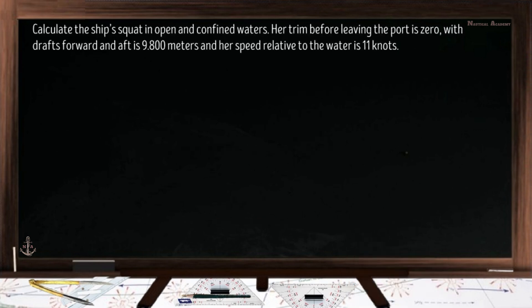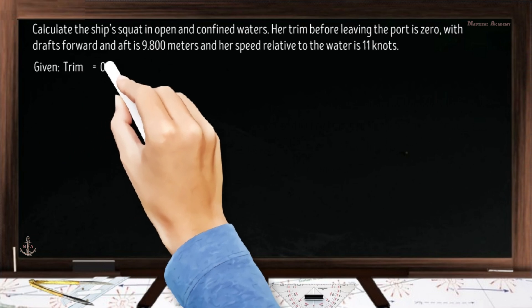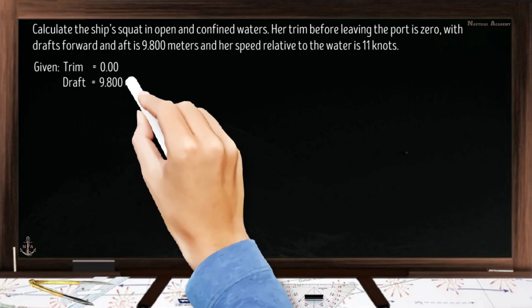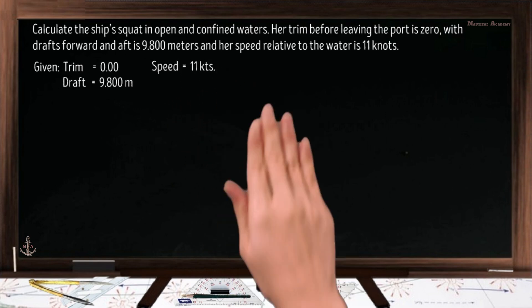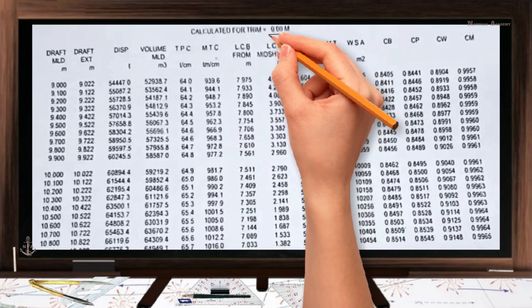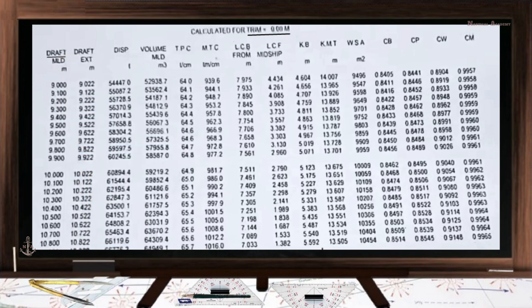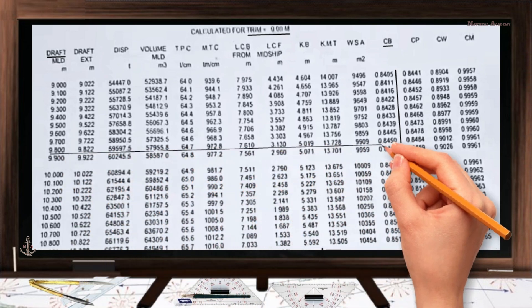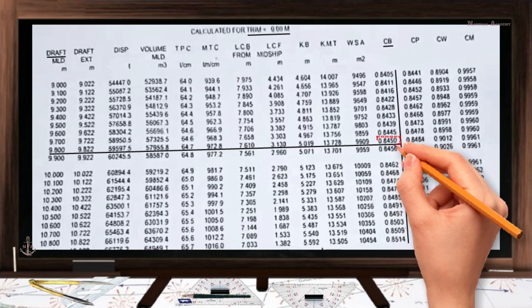Let us solve this example. Calculate the ship's squat in open and confined waters. Her trim before leaving port is 0, with drafts forward and aft of 9.800 meters, and her speed relative to the water is 11 knots. Using the hydrostatic table, for a draft of 9.800 meters, the ship's block coefficient is 0.8450.